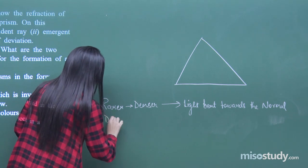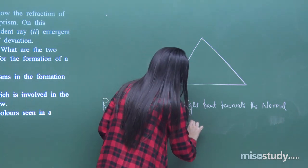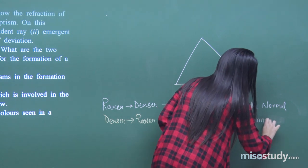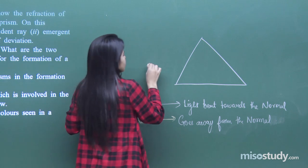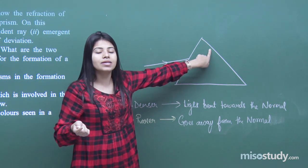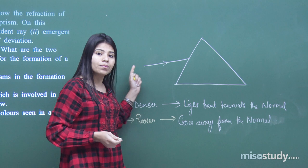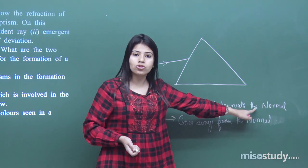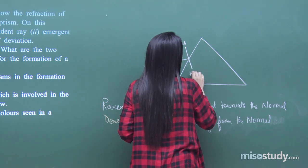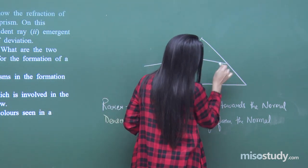Whereas when light travels from denser to rarer medium, it goes away from the normal. Suppose some incident light falls upon this prism — the air is the rarer medium, and the glass prism is comparatively denser. When the light goes from rarer to denser medium it will bend towards the normal. If I put a normal MM', the light will bend towards the base of the prism.